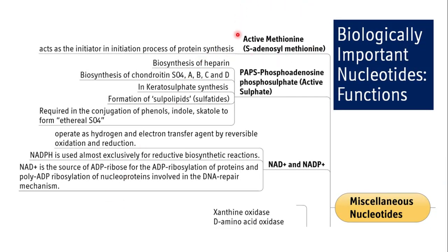S-adenosylmethionine, active methionine, acts as an initiator in the initiation process of protein synthesis. PAPS, active sulfate, has a role in biosynthesis of heparin, chondroitin sulfate (all four types A, B, C, D), and keratosulfate synthesis. It also has a role in formation of sulfur lipids called sulfatides, and is required in conjugation of phenols, indoles, and ketols to form ethyl sulfate. Active sulfate is thus involved in synthesis of sulfate-containing mucopolysaccharides.